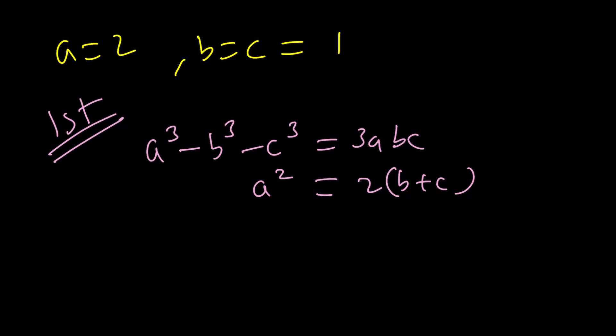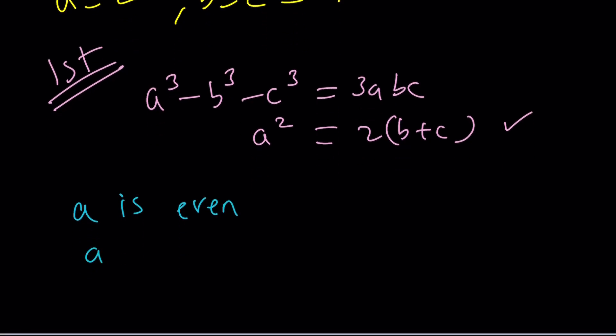Now, one thing I want you to notice here, which is super important from the second equation, we notice that a squared is even. We're going to use some parity arguments here, which is very powerful, by the way. Since a squared is even, a is also even. Also, notice that a is greater than b and a is greater than c. How do we know that? Look at the equations. Hopefully, you can understand what I'm talking about.